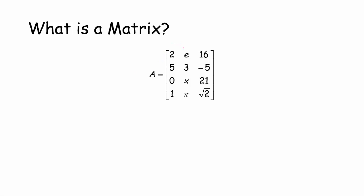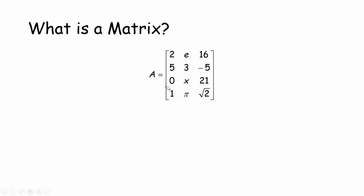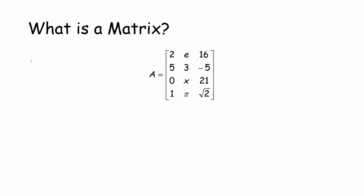The rows run horizontally — here I'm circling the rows. This matrix has four rows, and the matrix has three columns. The columns run vertically. Here are the three columns. So we would say that matrix A is a four by three matrix.